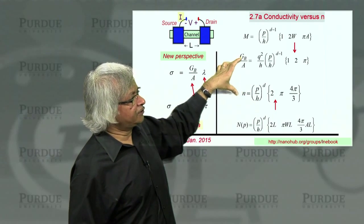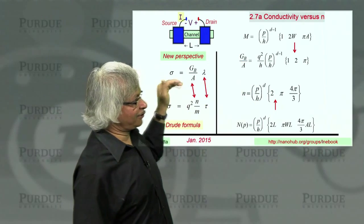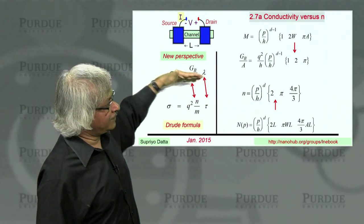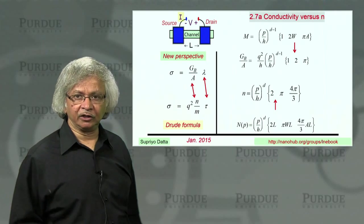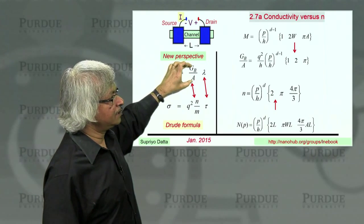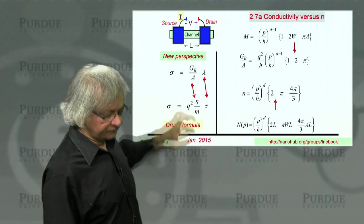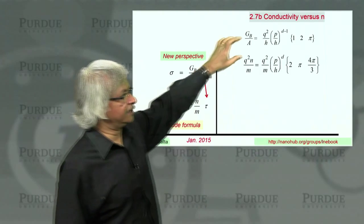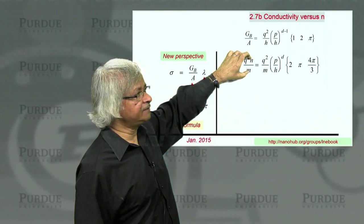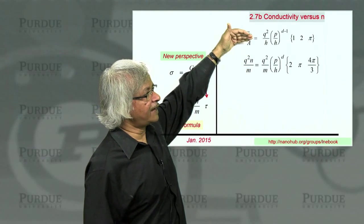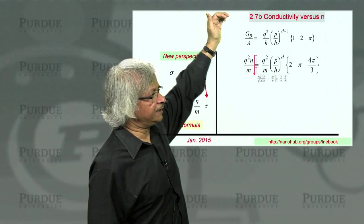So the expression for the ballistic conductance per unit area then looks something like this, and the expression for the electron density looks something like this. Now, what we'd like to do is look at the ratio of the two, because I guess what we're trying to do is find the ratio of this quantity to this quantity, and to see if they're equal or not. So for that, let's collect the results we had.